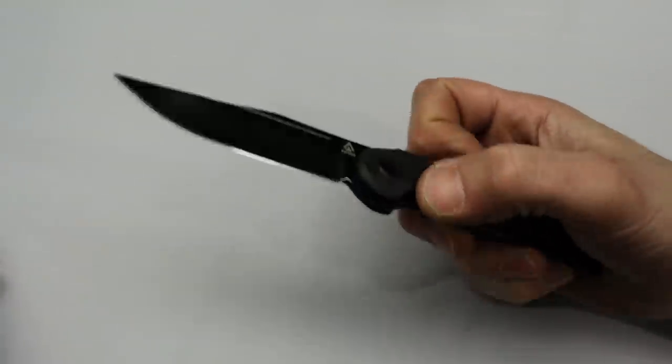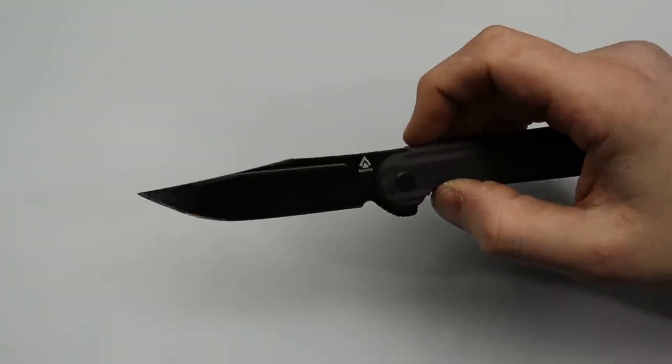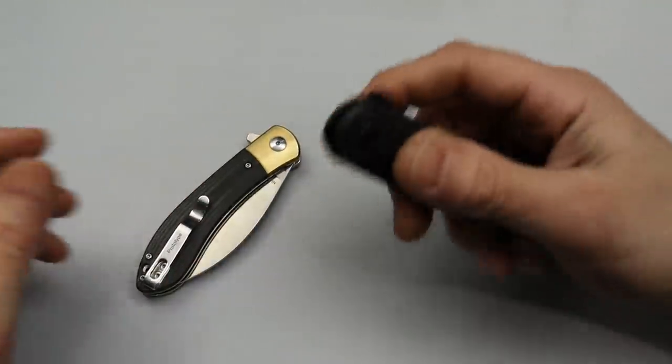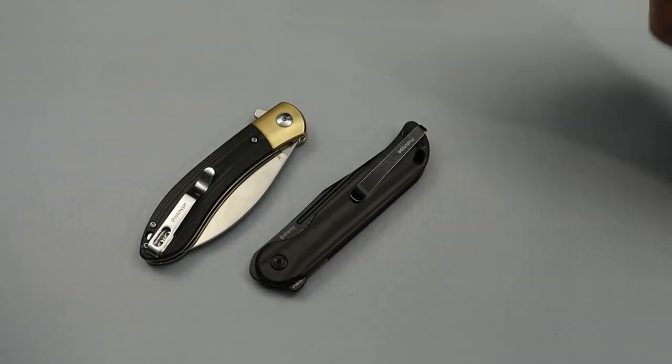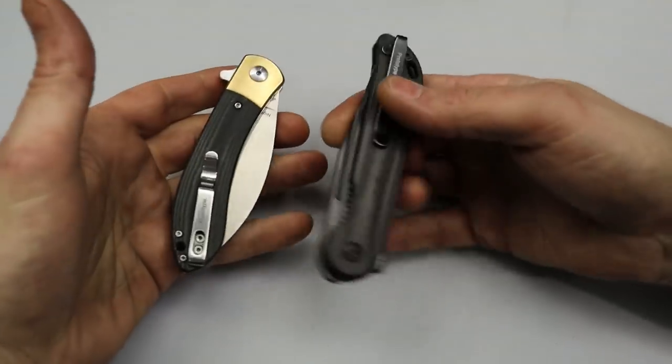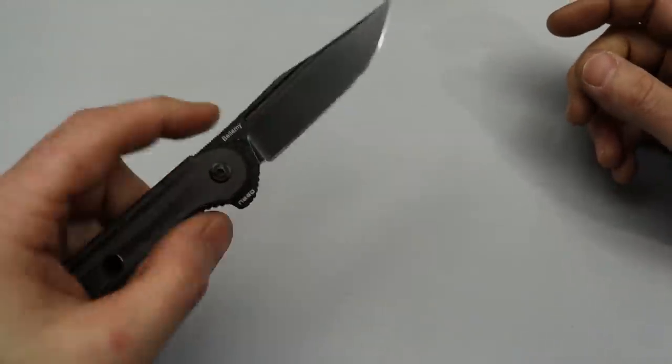Now this is the Detelith Bellamy and the Detelith knives you can pre-order on Vosteed knives. I'm going to link it down in the description for you guys. The Detelith Bellamy and the Detelith Nightshade. I spoke about it in yesterday's video.